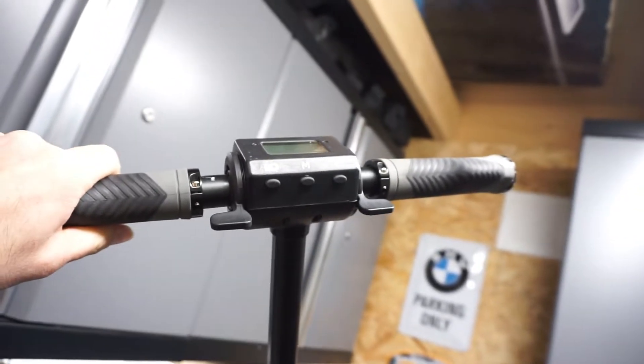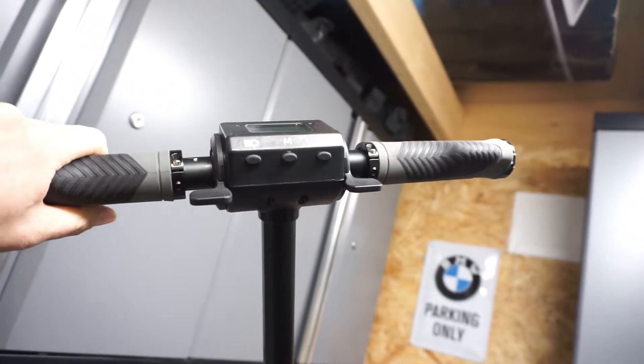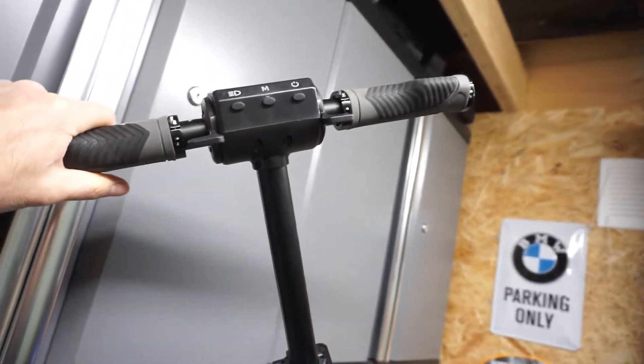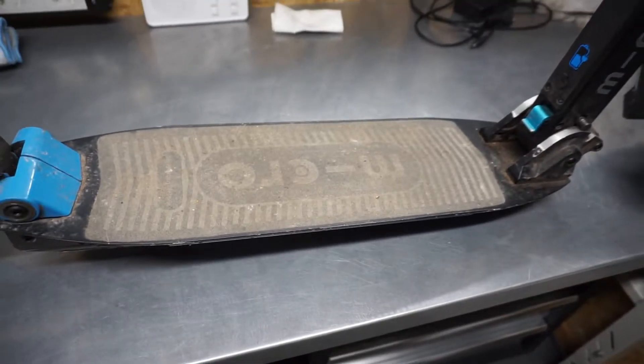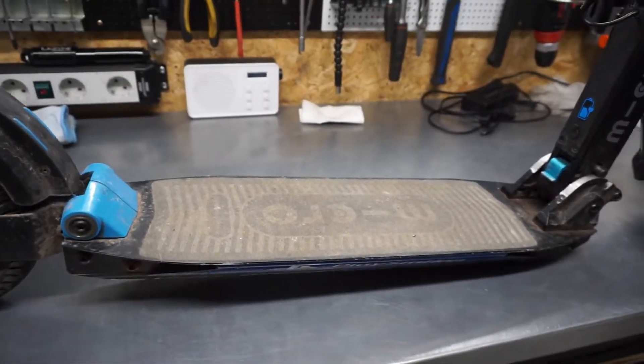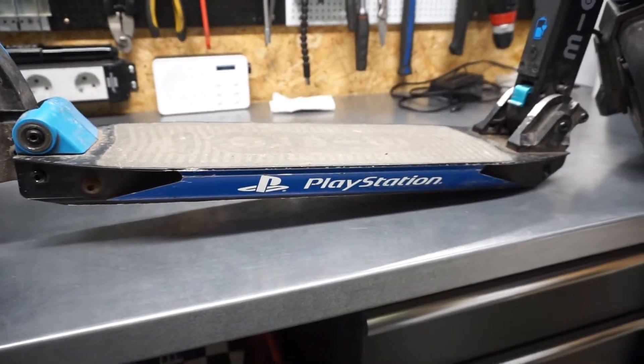You can see two levers. The right one is for the gas and the left one is for regenerative braking. And here underneath is the compartment for the battery.